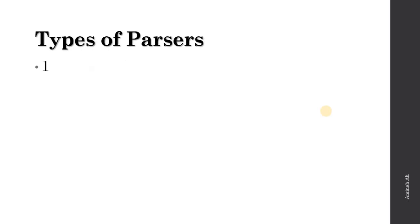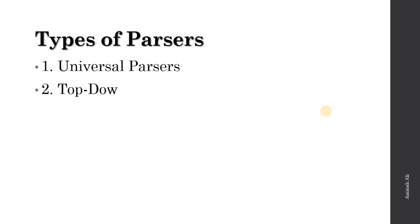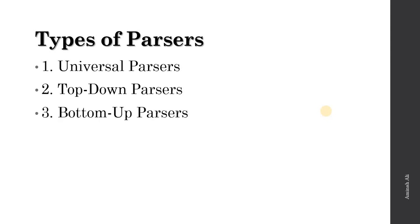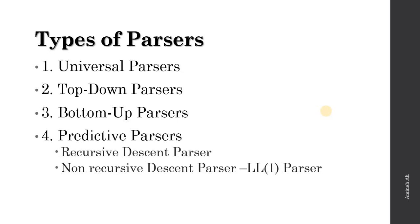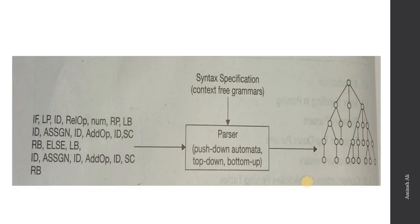Different types of parsers will be discussed in detail. We have universal parsers, top-down parsers, bottom-up parsers, and also predictive parsers. Within predictive parsers there are recursive parsers and non-recursive parsers, and you will see the term LL(1) parser frequently when studying compiler construction. All the parsers are very important and we will discuss each in full detail.